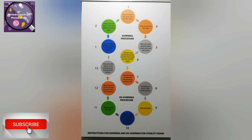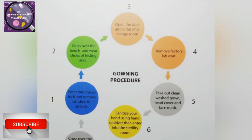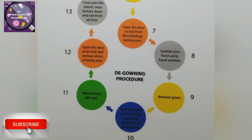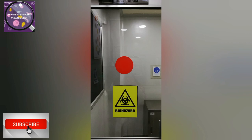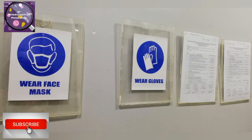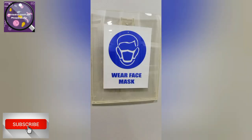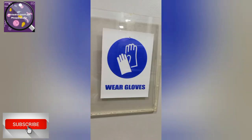I hope you can see the gowning board clearly and can make these kinds of flowcharts for your own lab in future. Now I am standing in the change room of the sterility room. You can check the biohazard tag here. Inside the sterility room there are PPE signs, SOPs for the laminar airflow, and some other methods. I hope you understand the signs and precautions used in a microbiology lab.